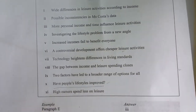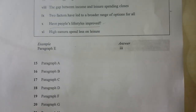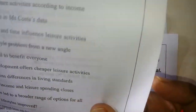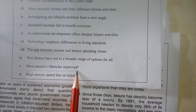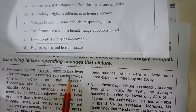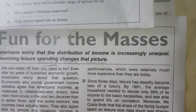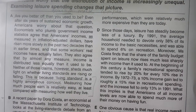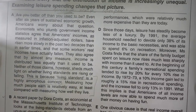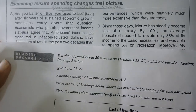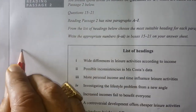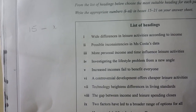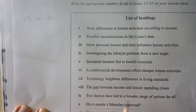Just check: 'Have people's lifestyles improved?' — 'Are you better off than you used to be?' — and at the end of the paragraph: 'Living standard is a highly amorphous concept; measuring how much people earn is relatively easy as compared.' I think this is the best option. So the answer to question 15 is heading viii. On the answer sheet you have to write in the same style — these are small Roman numerals, so write them the same way.